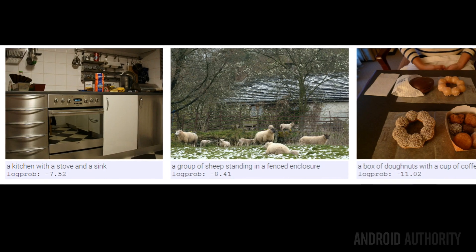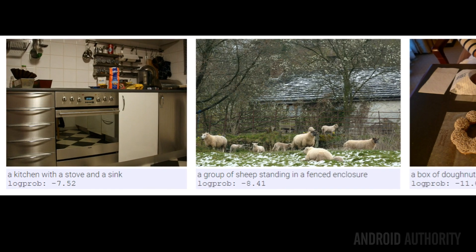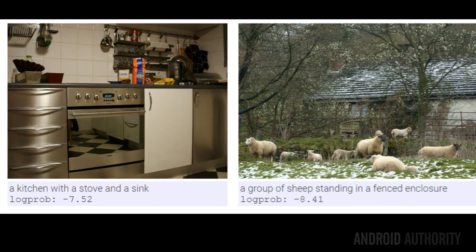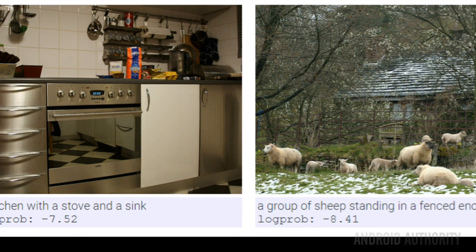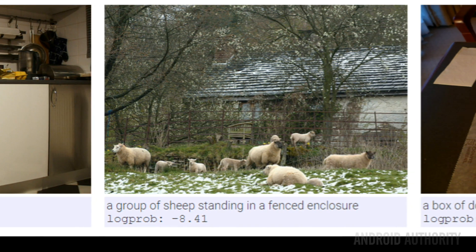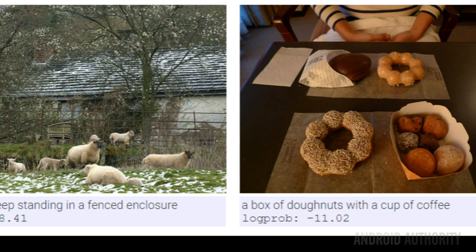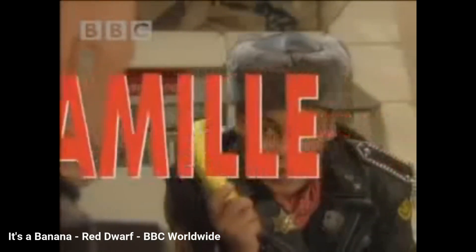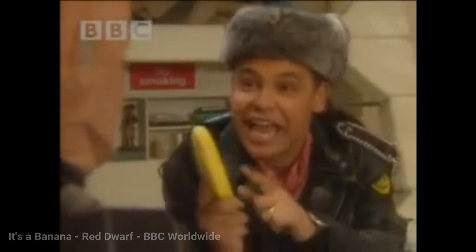So we know that companies like Google and Facebook use machine learning to help improve their services. One interesting area is picture annotation, where the machine is presented with a photograph and asked to describe it. The first two example annotations are quite accurate, although it's not entirely clear there's a sink in the first picture. The third is interesting in that the computer managed to detect the box of donuts but misinterpreted the other pastries as a cup of coffee — and not a banana or an orange!